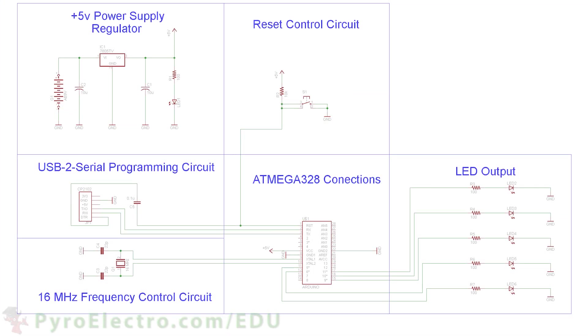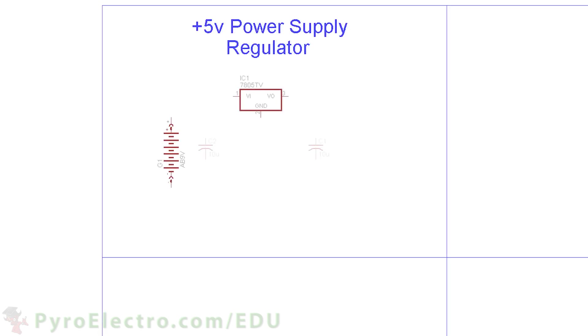Here we can see the complete schematic for this lesson, but let's go through each sub-circuit and explain what is going on. First, we'll build a power supply using a 9V battery and a 7805 plus 5V regulator to feed a plus 5V power supply to our circuit. A red LED will be used as notification that power is good.